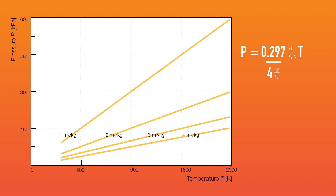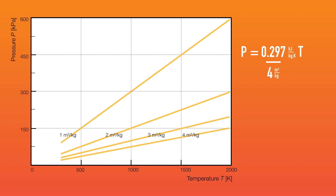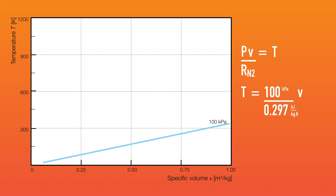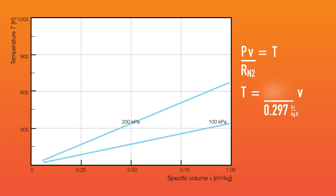For a temperature–specific volume chart, we make temperature the dependent variable. If we keep pressure at 100 kilopascals and vary the specific volume, we get a linear relationship with temperature. The lines here are called isobars since pressure is being held constant. The trend should make sense: at a constant pressure close to atmospheric pressure, as you cool nitrogen, it will occupy smaller and smaller volume — in other words, it will get denser. Subsequent increases in pressure will yield corresponding isobars.